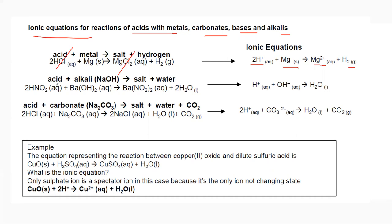For acid with alkali giving salt and water: for example, HNO₂ (aqueous) and barium hydroxide — cancel the NO₂ and barium ions. We are left with two hydrogen ions plus two hydroxide ions forming two water molecules. Since two is common throughout, simplify to: H⁺ + OH⁻ → H₂O.